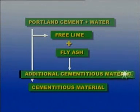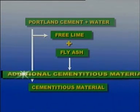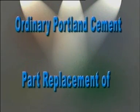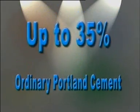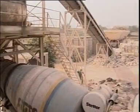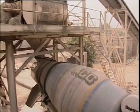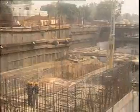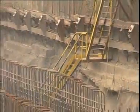The presence of fly ash also helps in reducing heat of hydration. Bureau of Indian Standards IS 456 permits use of fly ash as a part replacement of ordinary Portland cement up to 35%. This reduces the requirement of OPC and thus the concrete is economical. The reduced requirement of OPC helps in conserving limestone and coal, and also reduces carbon dioxide emission, making it environment friendly.